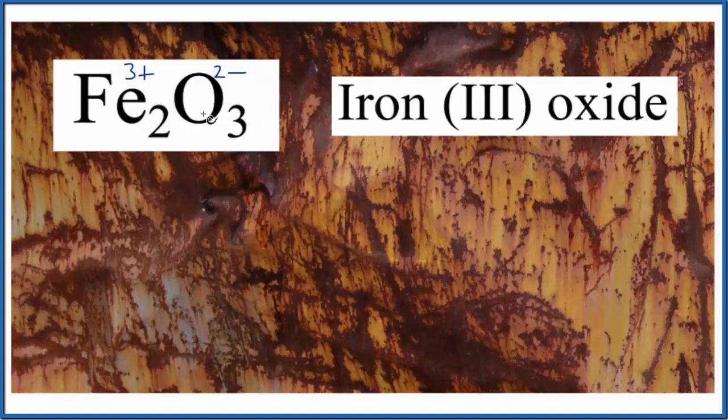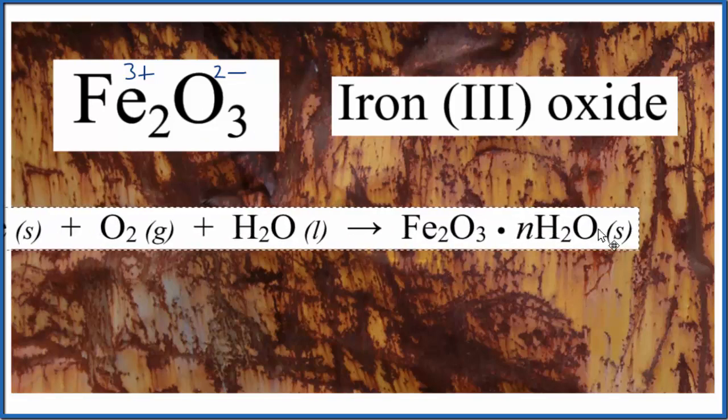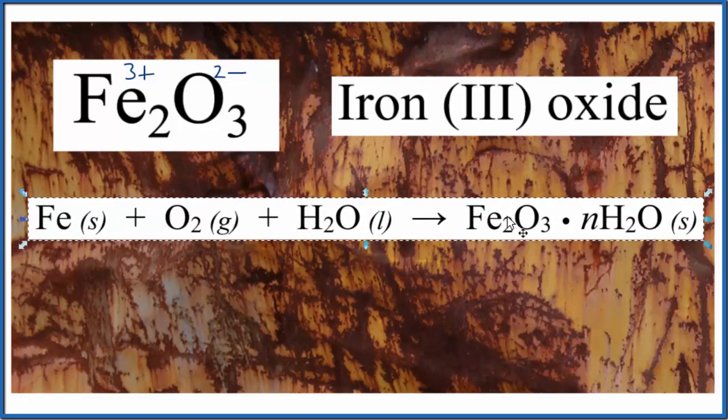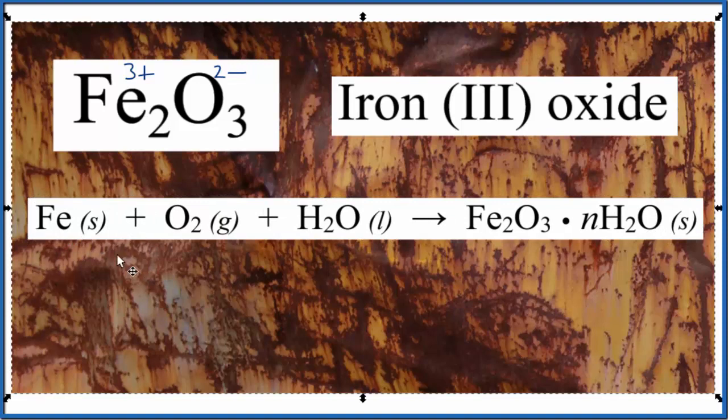When we think about the chemical equation that leads to us having this rust, this Fe2O3 that looks like this, we have iron in some metal like steel, we have oxygen from air, and then we have water involved. These are necessary for rusting to take place.